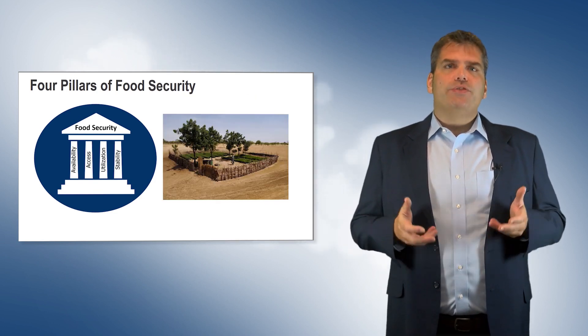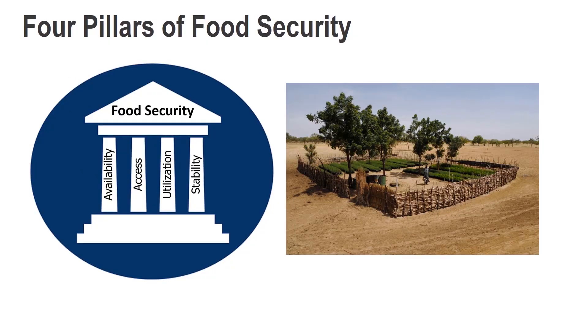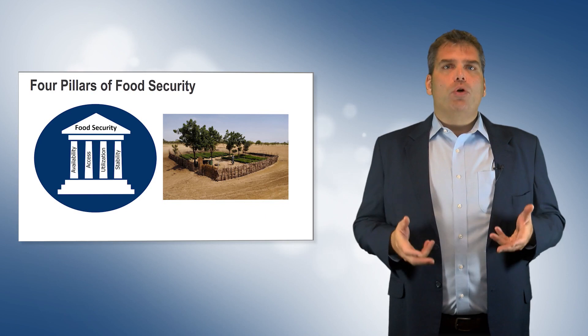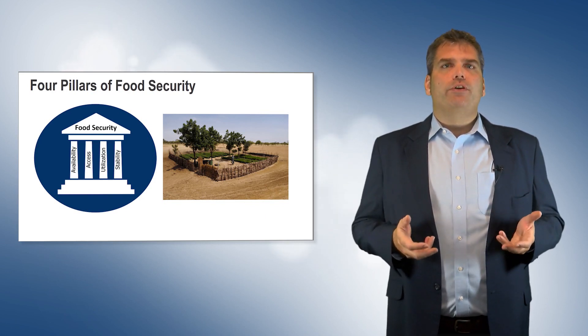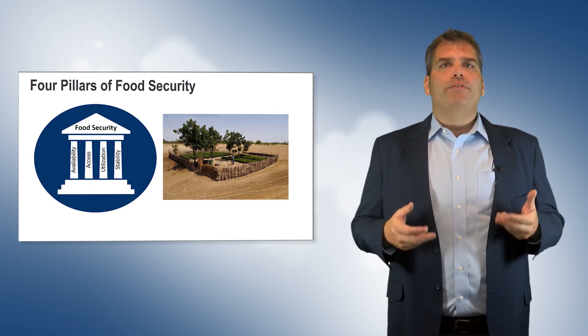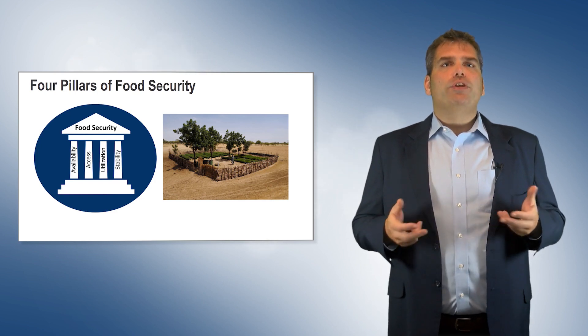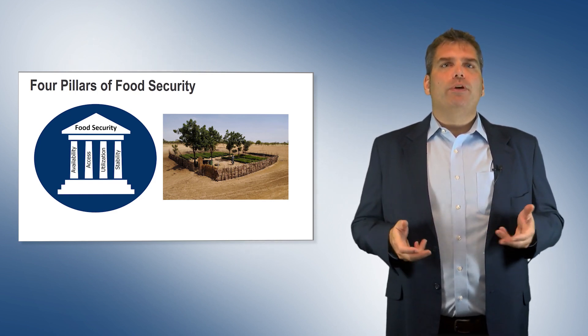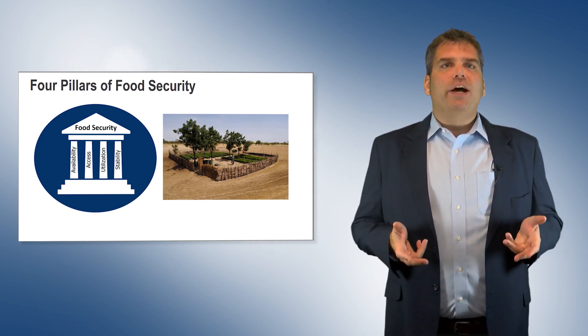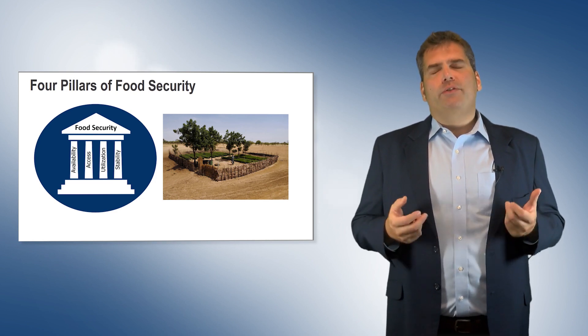The last factor, stability, measures the tendency and persistence of food insecurity over time. Chronic or permanent food insecurity is the most extreme form of instability. It is usually triggered by periods of infrequent food insecurity that slide a population further down into the poverty trap.